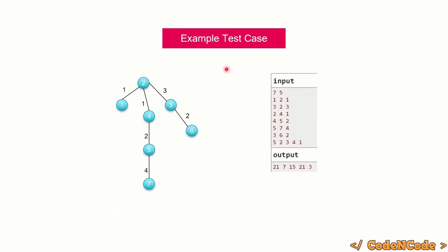Here is an example for better understanding. We have seven nodes and five queries. Since we have seven nodes, we have six edges — a, b, and their weight. Node one is connected to two with weight one, and so on. I have created the graph.